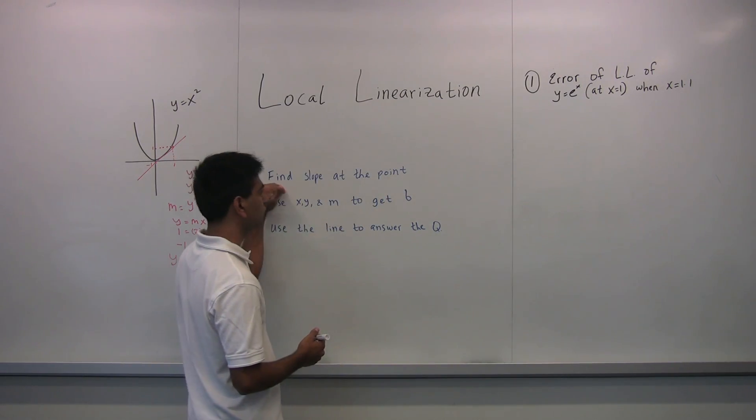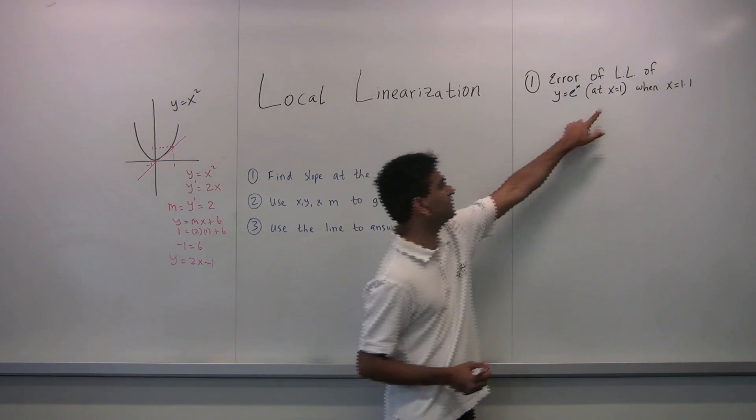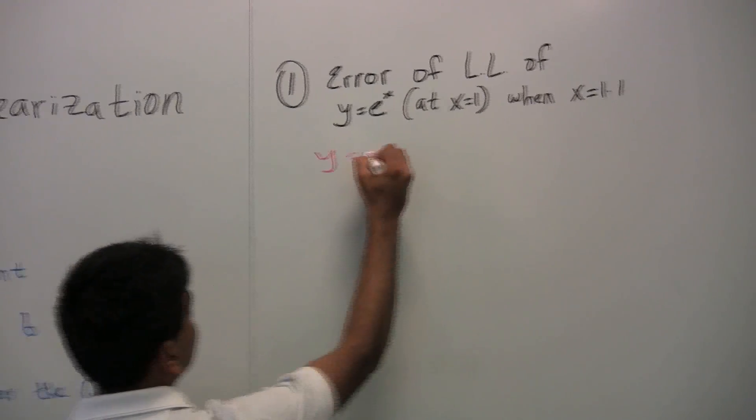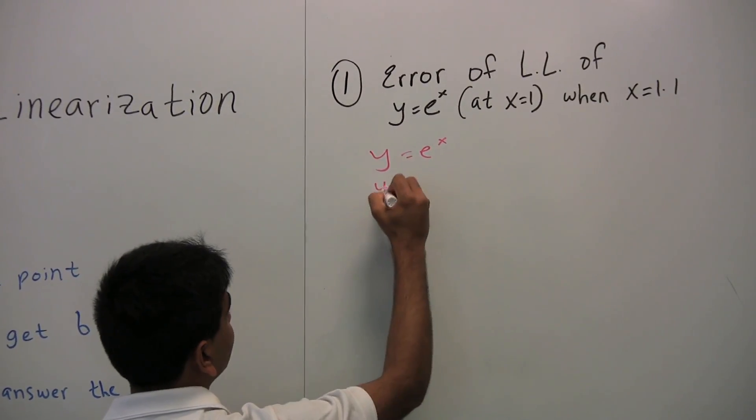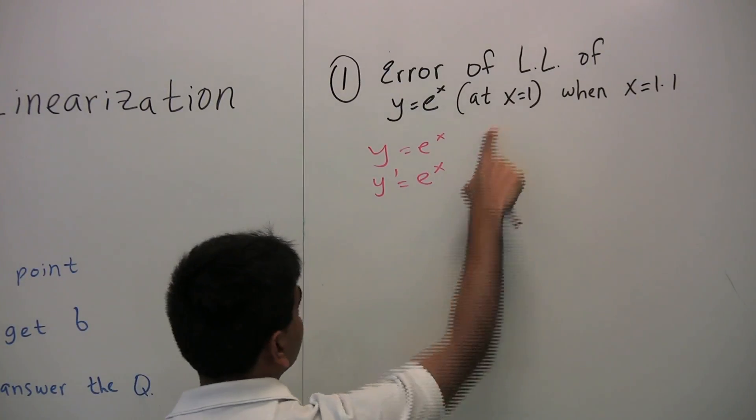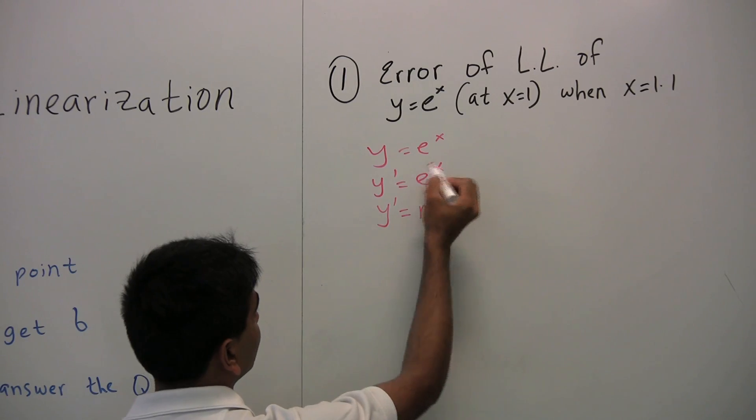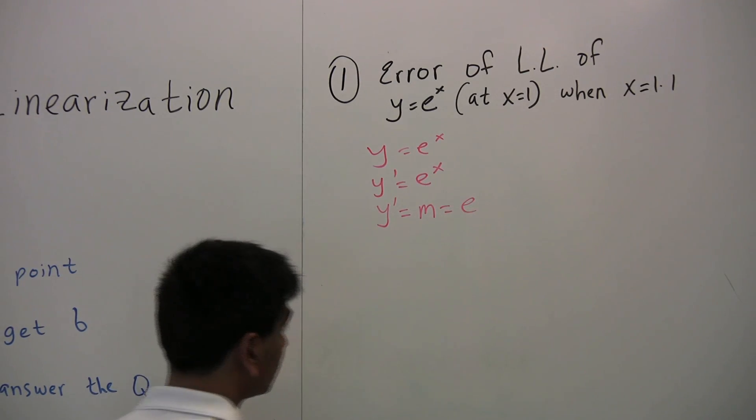So the first step we're going to do is we're going to find the slope of this function at the given x value. So as we know, the derivative of e to the x is just e to the x. So y prime is e to the x. Using x equals 1, we get that the derivative, meaning the slope, is just e, because e to the 1 is, well, e.